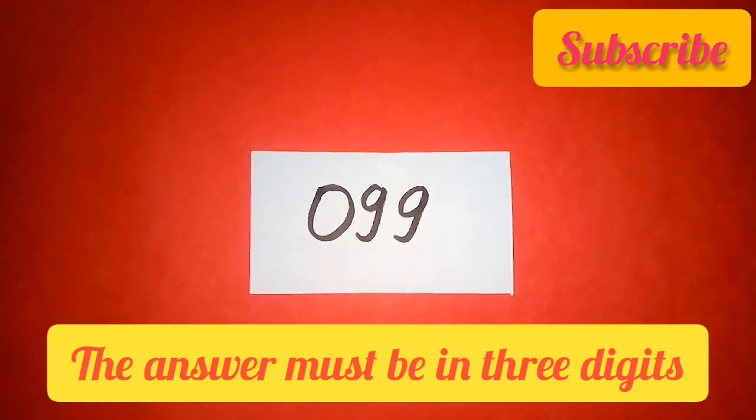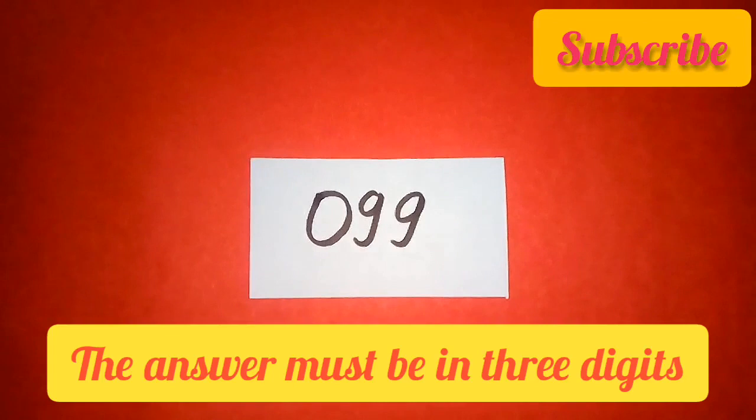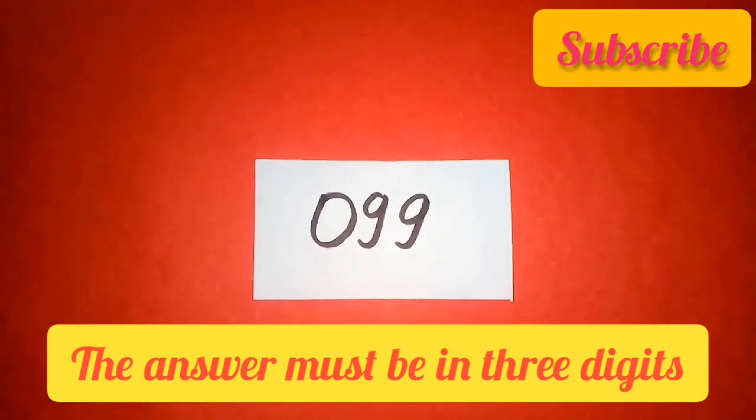So if your number is two digit number, you can add zero in the end. So my answer is 0 9 9. Let us see the next step.